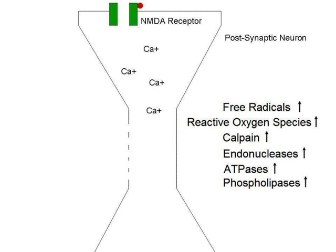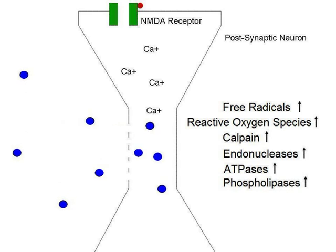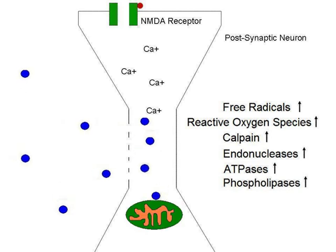As the cell's membrane is broken down by phospholipases, it becomes more permeable, allowing ions and harmful chemicals to flow into the cell. Mitochondria break down, releasing toxins and apoptotic factors into the cell.